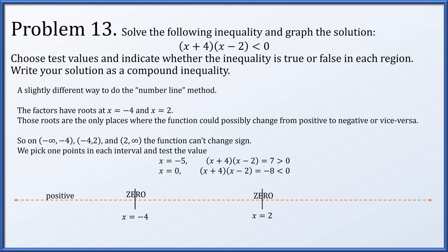Any test value in the correct region works — for the left region you could pick negative 8, negative 321, or even negative 4.01. The function is negative only between negative 4 and 2, so the solution expressed as a compound inequality is: x is greater than negative 4 and less than 2.